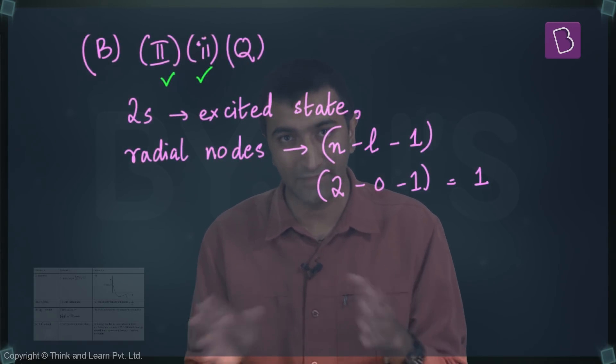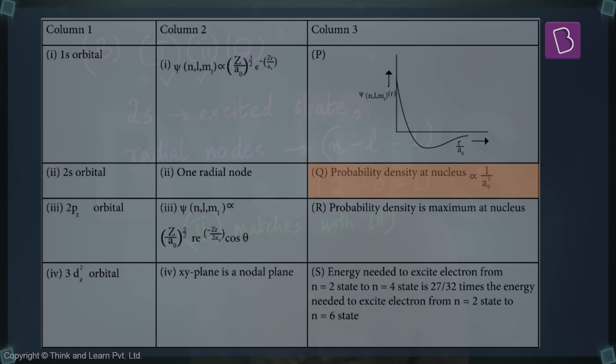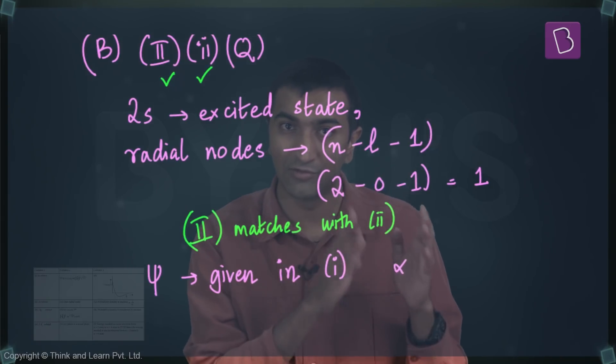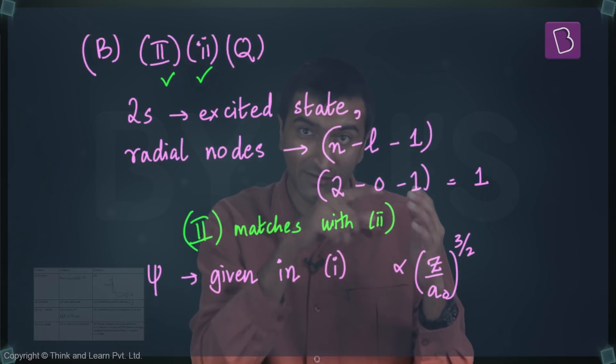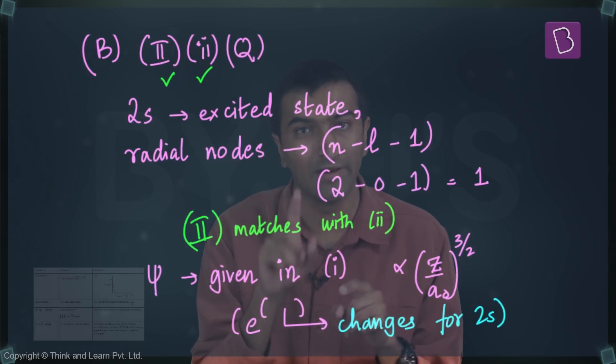Now once you have that sorted, you need to figure out if Q also matches with these. Q says that the probability density is proportional to 1/a₀³. What you need to keep in mind is that this whole thing of the 1s orbital, the equation for ψ that we saw, is going to be pretty similar to the 2s orbital. The only thing that would change is the e parameter, but what was before that, Z/a₀ to the power 3/2, that remains the same. Why am I talking about ψ? Because probability density is simply ψ², and if I square that, I also get that the Z/a₀ thing gets cubed, because it's 3/2 times 2, that's Q. So ψ² is proportional to 1/a₀³, which means that Q works out with the 2s orbital that has one radial node.